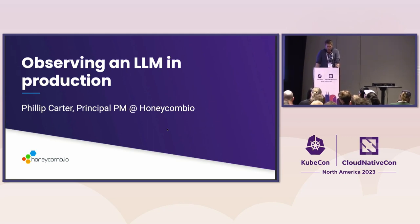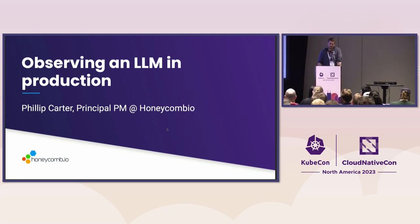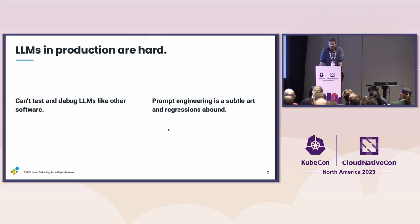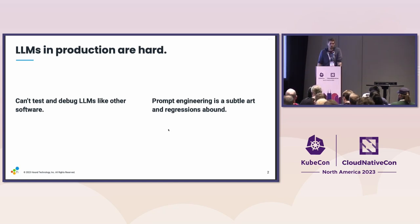I want to talk about what I call observing an LLM in production, but this is really about ways that you can make large language models more reliable in production. The impetus behind this is, as you are likely aware, pretty much every organization on the planet right now is looking to build with large language models to some extent. We were one of those, and I want to walk through some of our case study at Honeycomb, where we learned a whole lot.